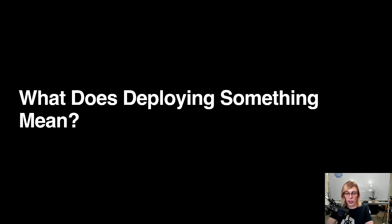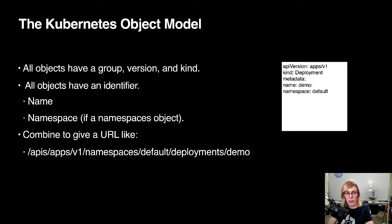To talk about why some of these challenges are surprisingly hard to do well, I want to cover what deploying something actually means and the logistics of the Kubernetes API itself. The Kubernetes API has an object model, somewhat analogous to Linux's 'everything is a file' model. Everything is represented with a group, version, and kind — for example, a deployment is an object in the apps/v1 API.